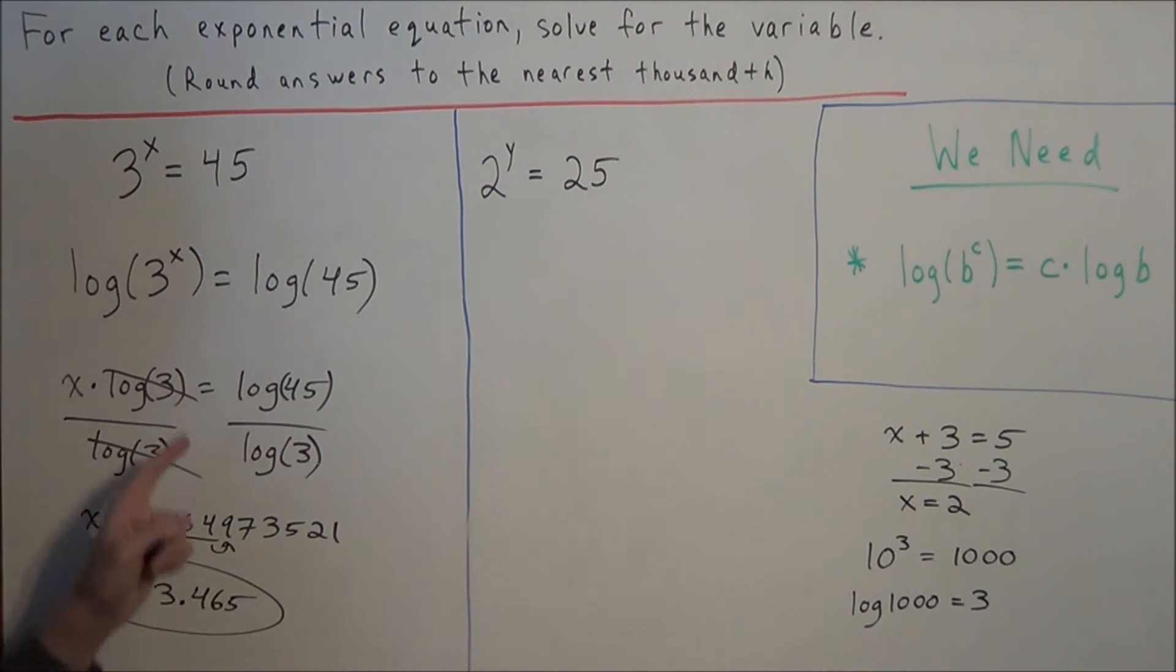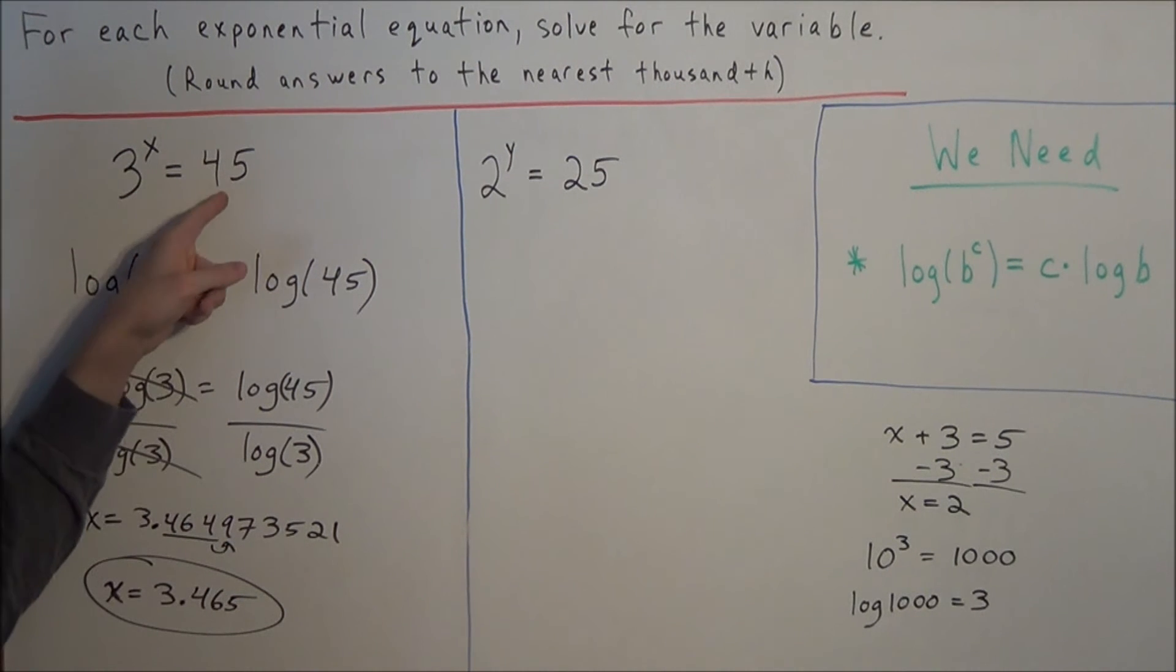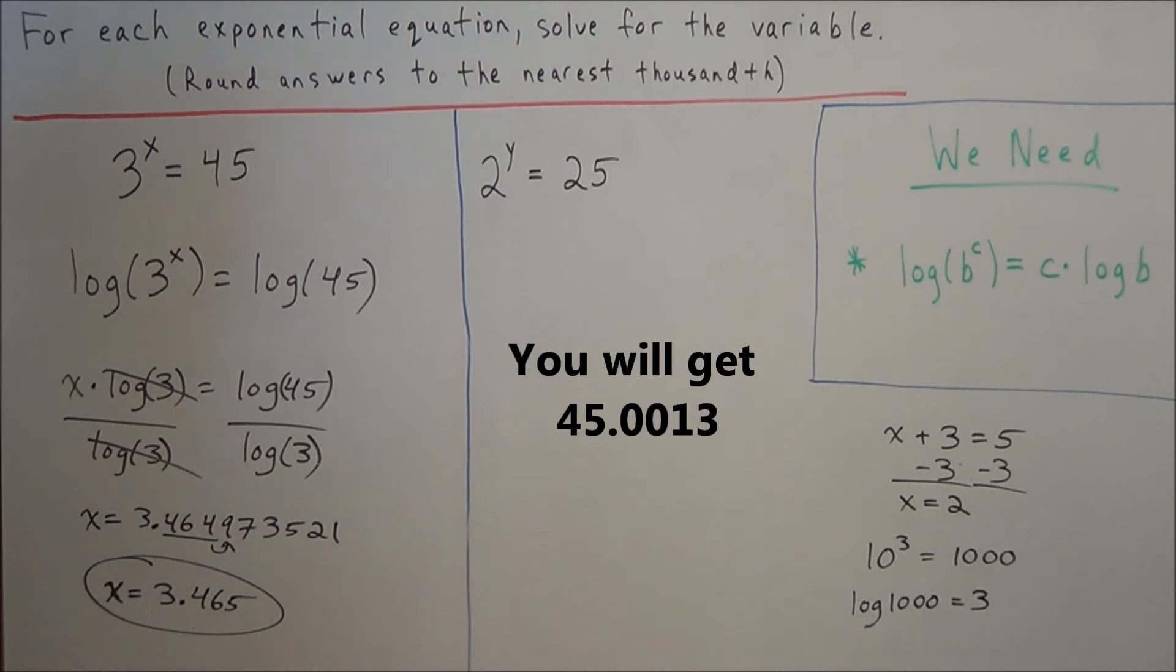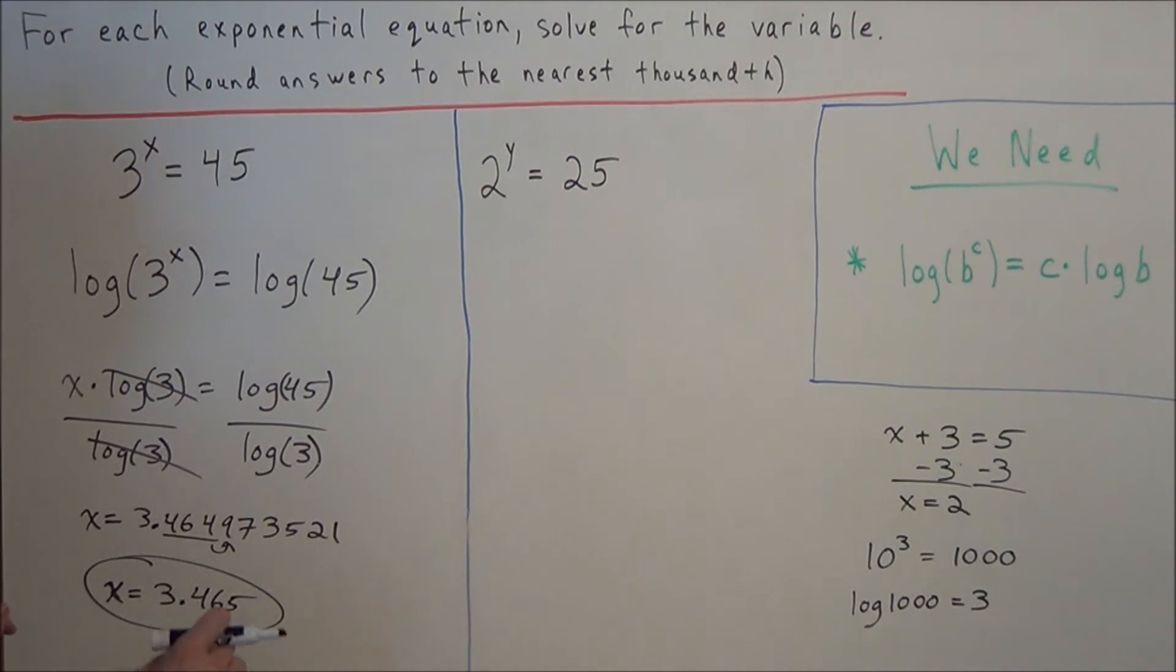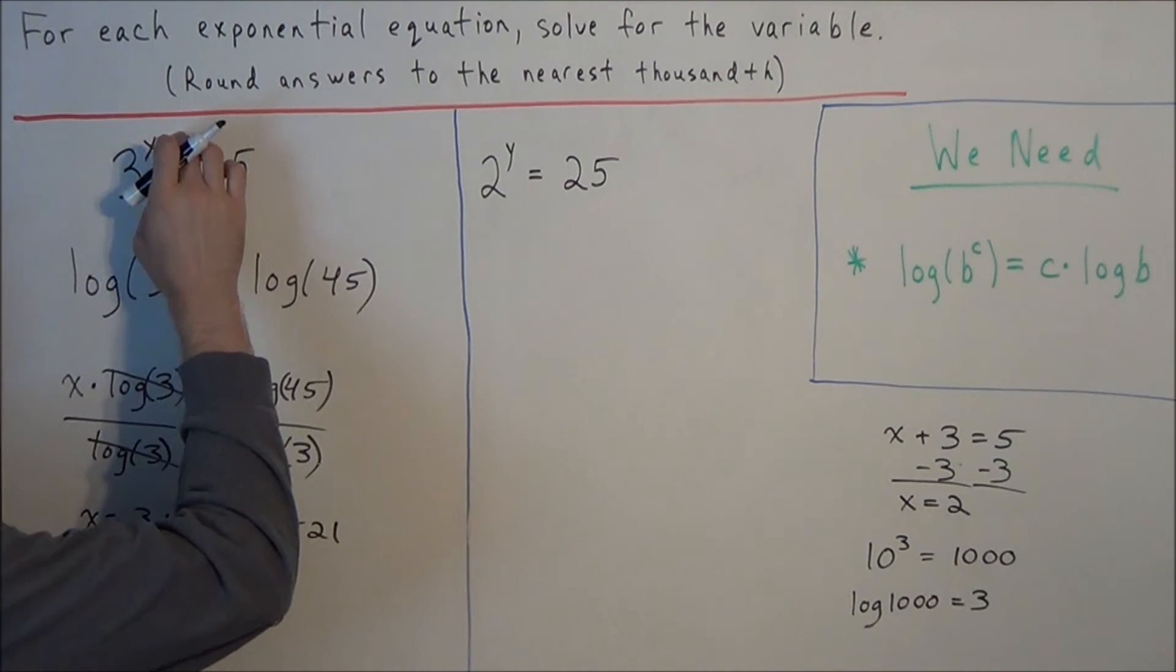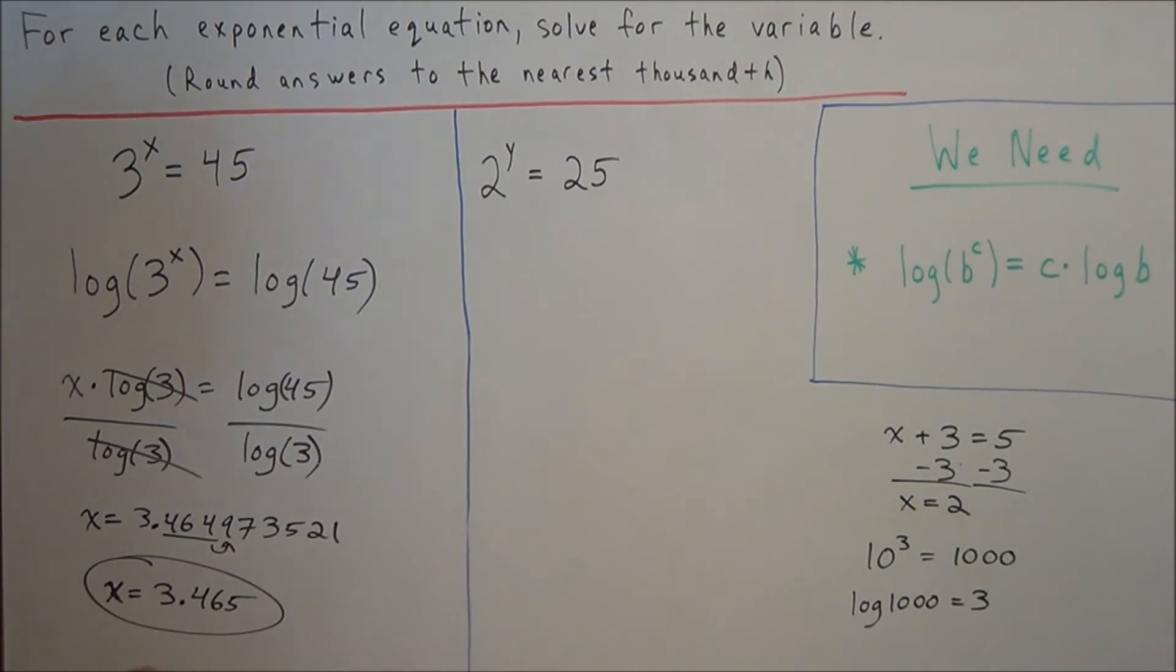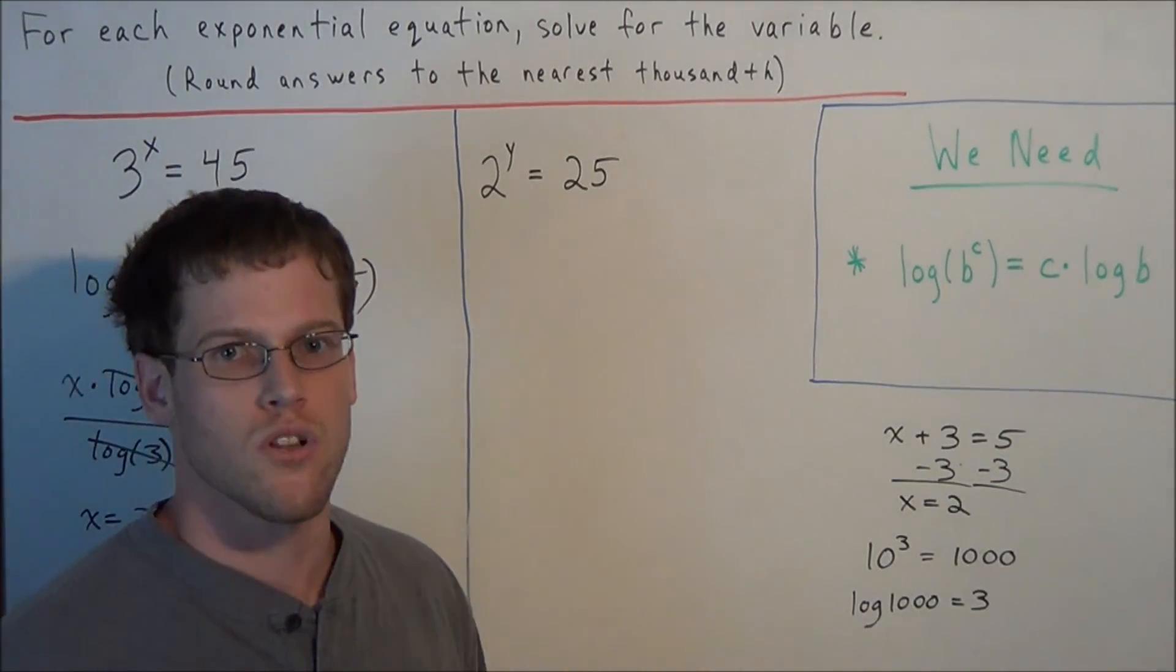And you can punch this number in for x and you should get something very close to 45. Because we rounded we won't get exactly 45 but we'll get something really close to 45. If we were to plug this entire piece in, whatever popped up on our calculator after log 45 divided by log 3, if we plug that entire string into this problem for x then we would get exactly 45, but we're rounding so we're going to get something just close to 45.